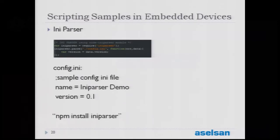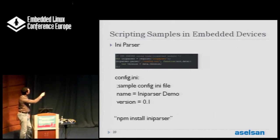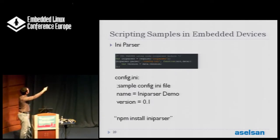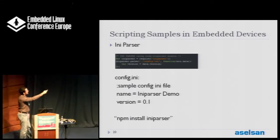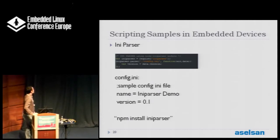My last example is an iniparser example. Here we parse a sample ini file with fields such as name, version, etc. We use the power of NPM — we install an iniparser module with one line of command, then require the iniparser. We have an asynchronous parse function; we give it the file name, and when it finishes parsing it goes to the callback function. In the data variable we will have values like data.version or data.name. If an error occurs, it will be in the error variable; if no error, it will be null.